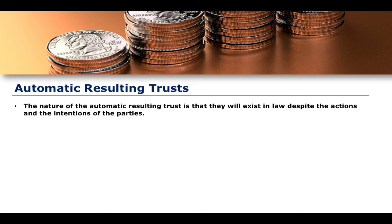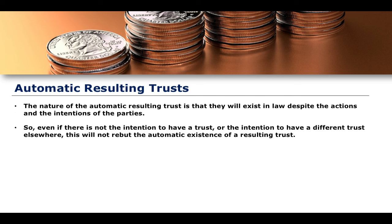The automatic resulting trust, the nature of such an instrument, is that it will exist in law despite the actions and intentions of the parties. The actions and intentions of parties could be completely in contravention to what the law essentially exists to achieve, and so the automatic resulting trust will exist in law despite these actions.